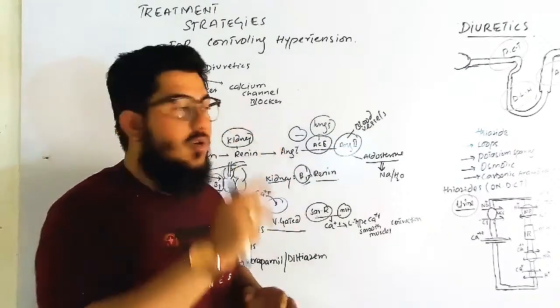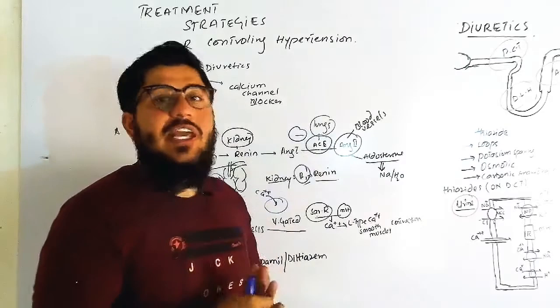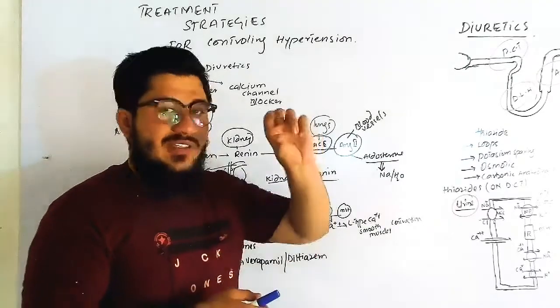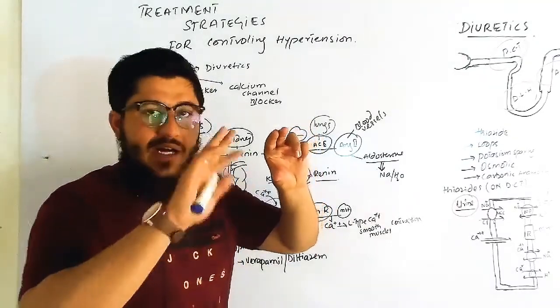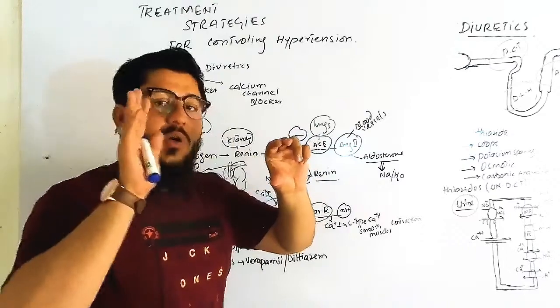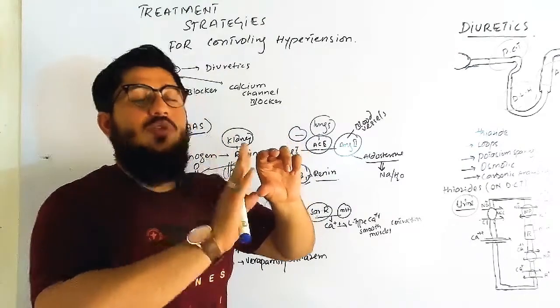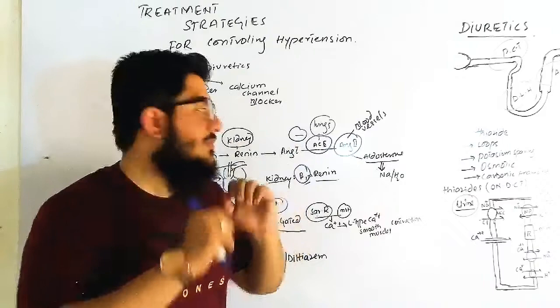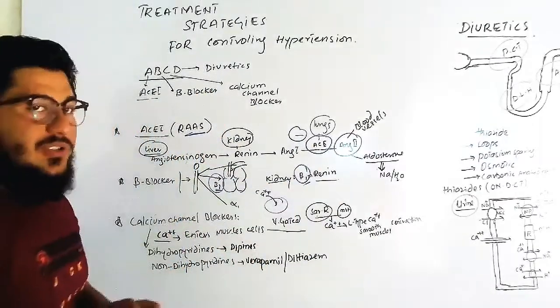Blood vessels will not constrict, aldosterone will not cause reabsorption of sodium and water, and blood vessels will be dilated. So blood pressure is decreased. And we have beta blockers.